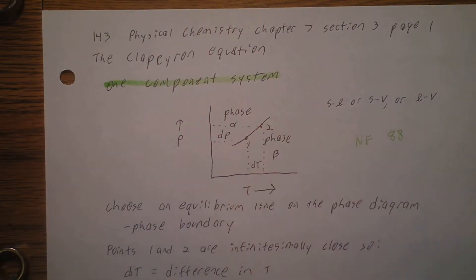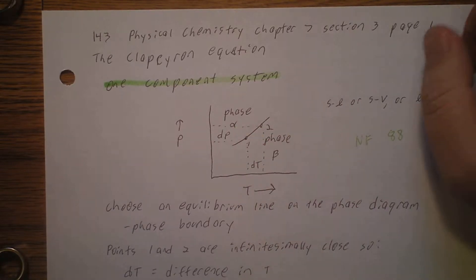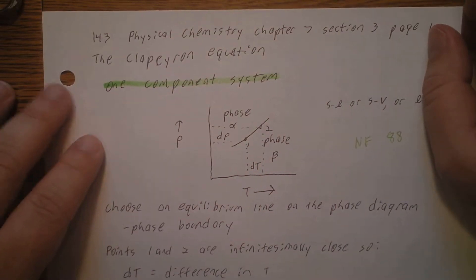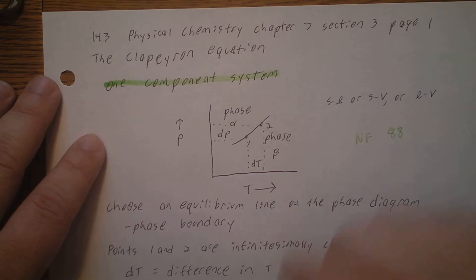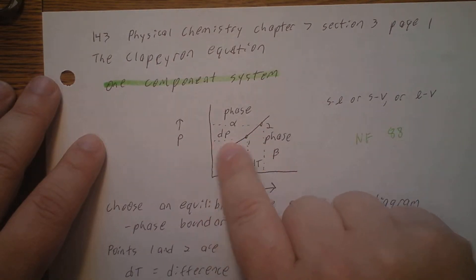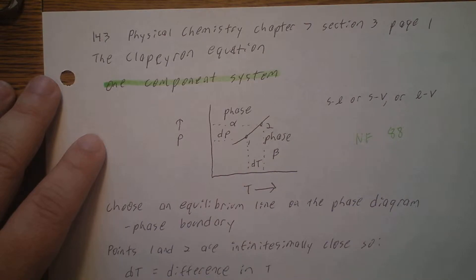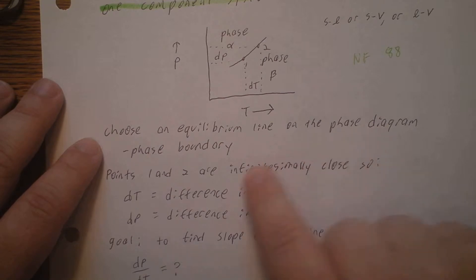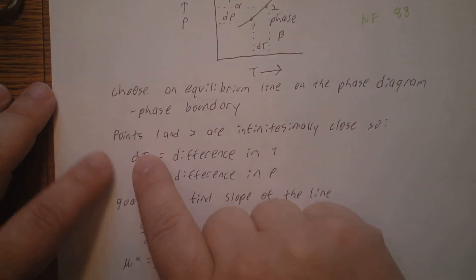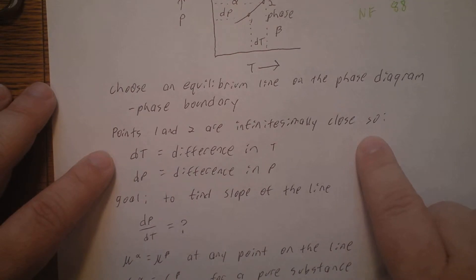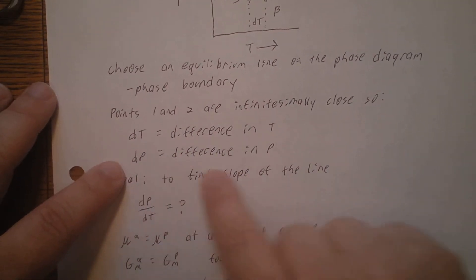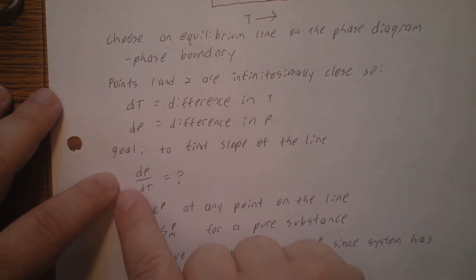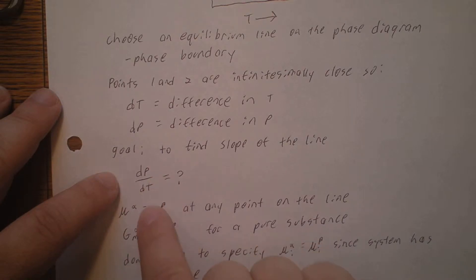Anywhere along the line, both phases alpha and beta are in equilibrium with each other. We're going to be comparing two points, 1 and 2, with each other, and we're going to say these two points are infinitesimally close together. So the difference in pressure between them is dP, and the difference in temperature is dT. Our goal is to find the slope of this line — the derivative of pressure with respect to temperature.